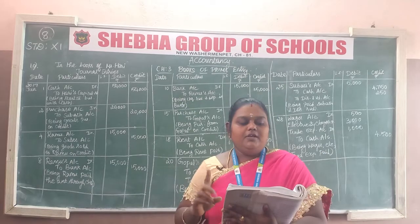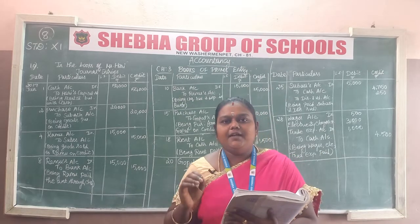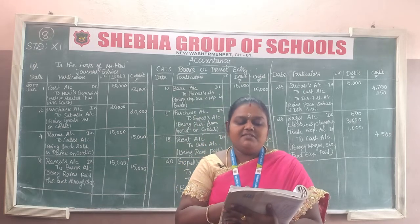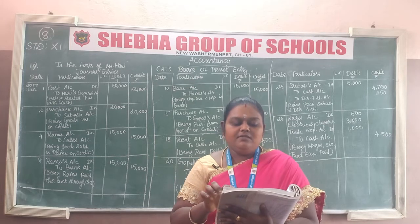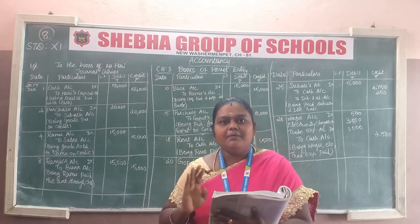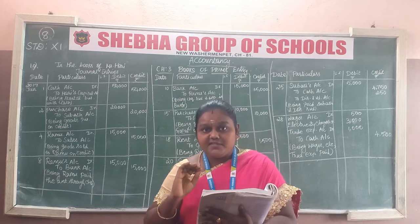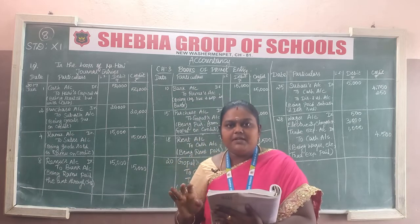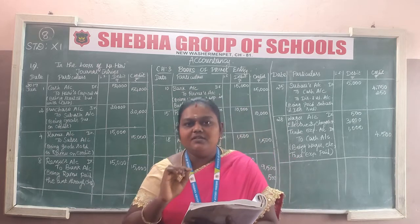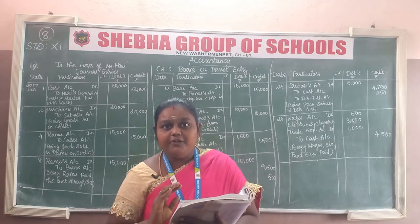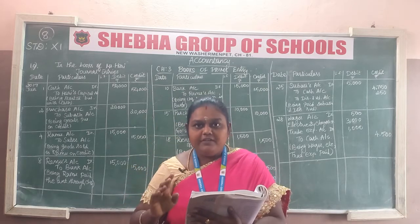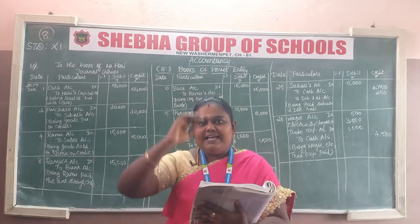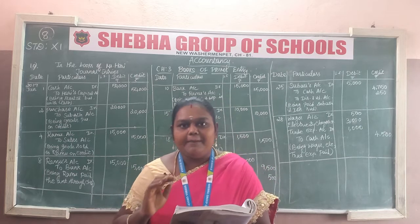Now the year is 2018, March. New transactions: Ramesh started business with cash Rs. 3 lakh, goods Rs. 80,000, and furniture Rs. 27,000. These three items — cash, goods, and furniture — represent the capital investment. Entry: Cash account debit, stock account debit, furniture account debit — all to Ramesh's capital account.